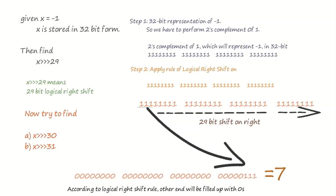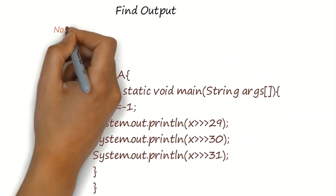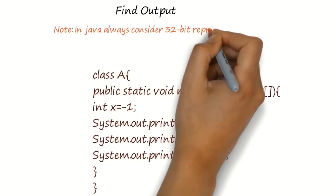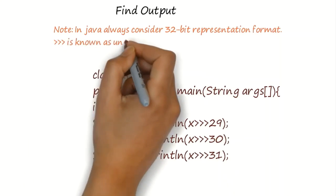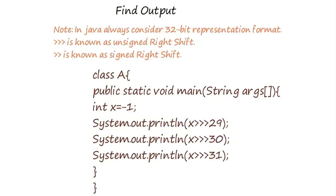Now, try to find out logical right shift on X by 30-bit and 31-bit. Now, try to find out the output of this Java code. But note that Java will use 32-bit representation for representing integers and in Java, logical right shift is known as unsigned right shift and arithmetic right shift is known as signed right shift.